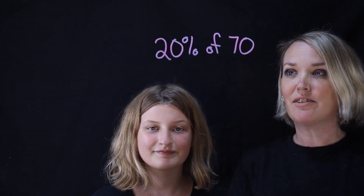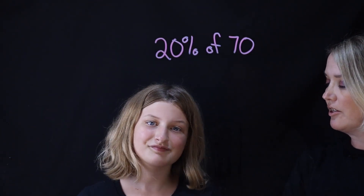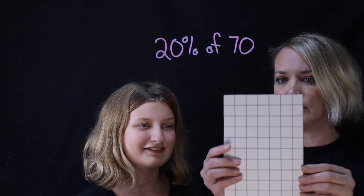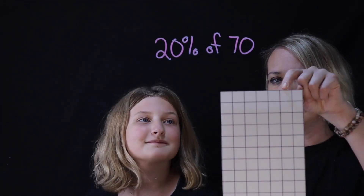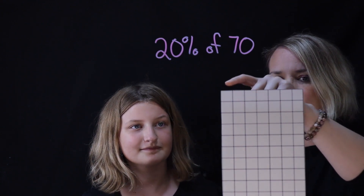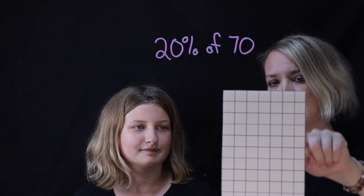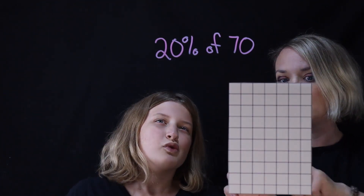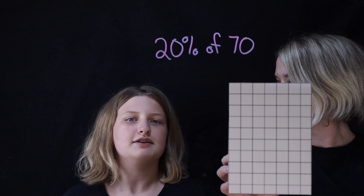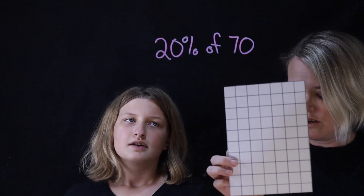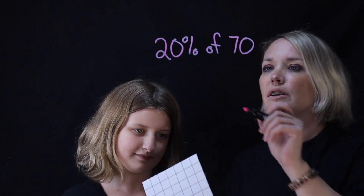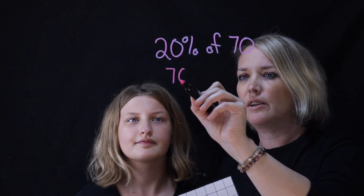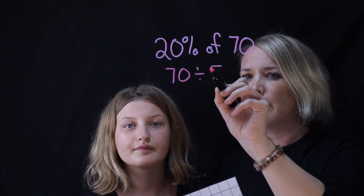Hi everyone. Today we're going to do 20% of 70 and Anna's here to tell us how she did it. Hello. So Anna, I've got 70 here — one, two, three, four, five, six, seven, and there's 10 in each row. How do you want to figure out 20% of this? Well, 20% can also be divided by five. So instead of thinking of 20%, you want to think of 70 divided by five.